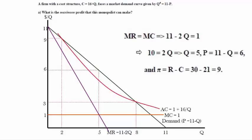From the inverse demand function, P equals 11 minus Q, we obtain the marginal revenue equation, MR equals 11 minus 2Q. From the cost equation, we get marginal cost equals 1.